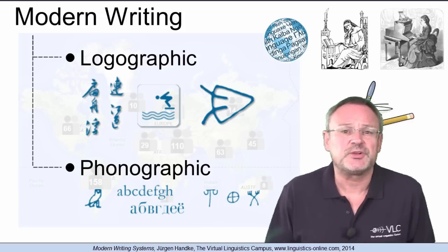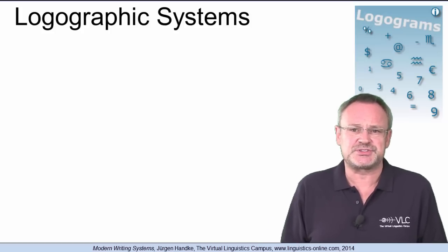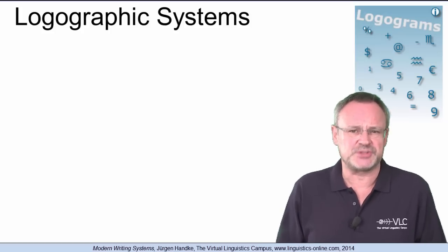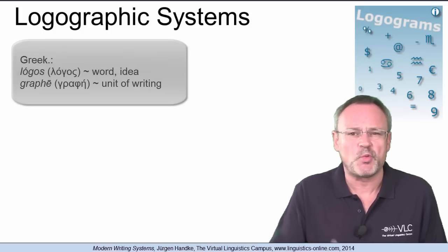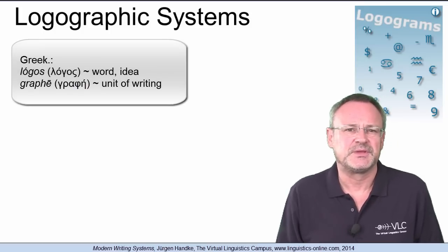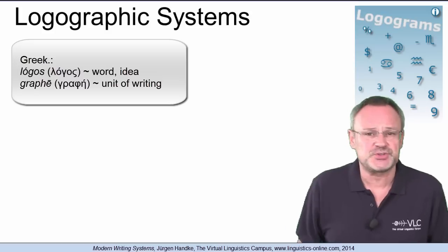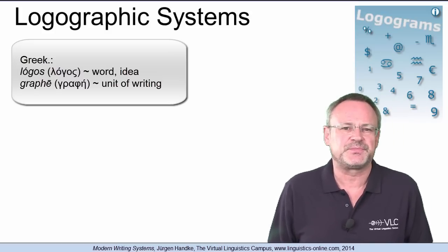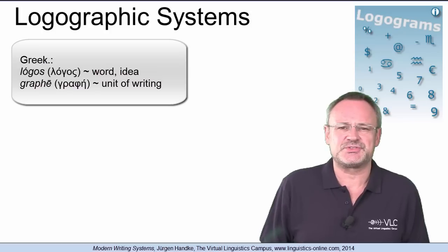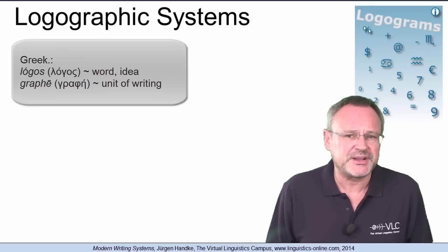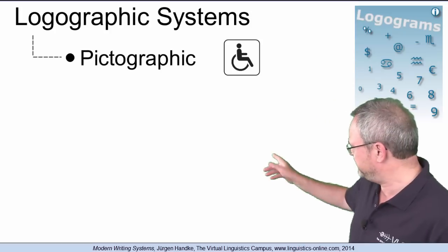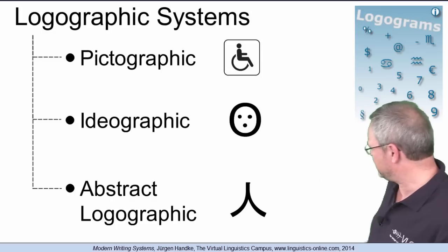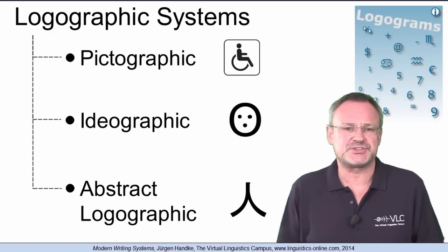Let us look at logographic writing systems first. They make use of symbols that represent words or concepts, where Greek logos means word or idea. The shape of the symbol employed is often closely related to the meaning of the respective concept. There are three variants of logographic writing systems: pictographic systems, ideographic systems, and abstract logographic writing systems.